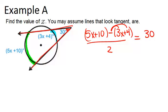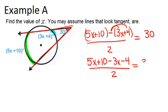So the first thing I'll do is get rid of the parentheses and write it as 5x plus 10 minus 3x minus 4, and that's all divided by 2 equals 30.